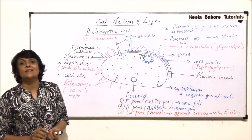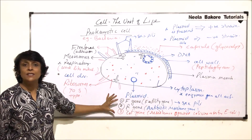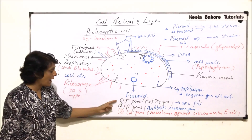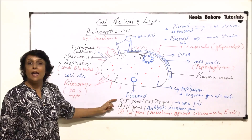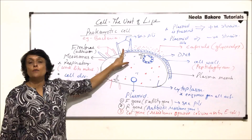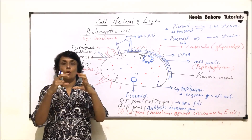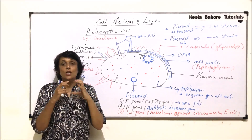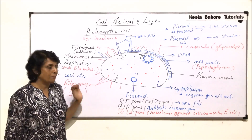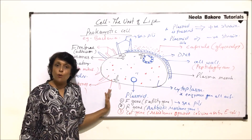So the col gene provides resistance against that toxin. These three genes — F, R, and col — are present on plasmids. The F gene is responsible for formation of sex pili so that a positive strain cell can hold a negative strain cell, allowing them to conjugate and exchange genetic material.